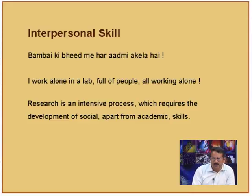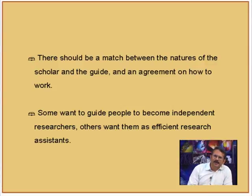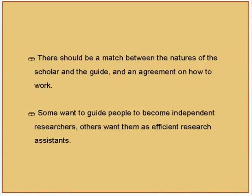There should be a match between the natures of the scholar and the guide, and an agreement on how to work. An example of a mismatch: the student is independent-minded and wants time for trial and error, whereas the guide wants to check progress at frequent intervals. The guide keeps asking every week what is happening and telling the student what to do next, while the student is already involved in testing his own ideas and cannot shift attention. This is one kind of mismatch.